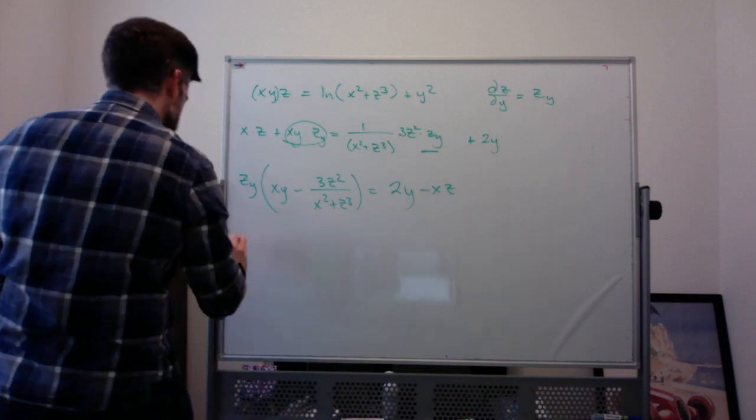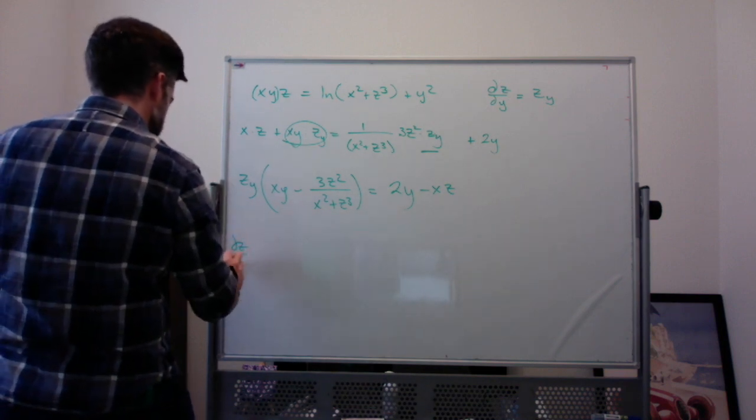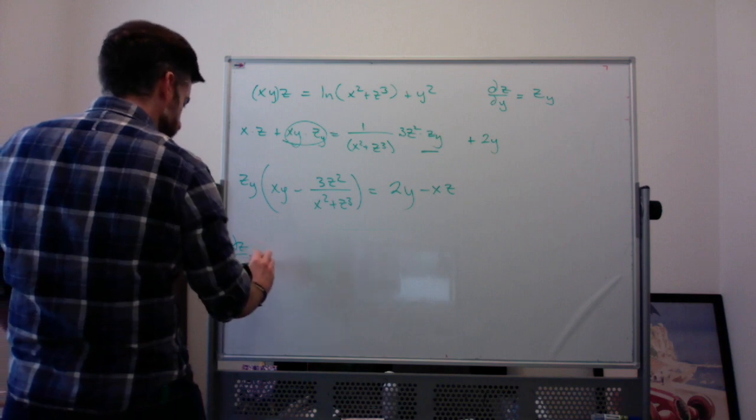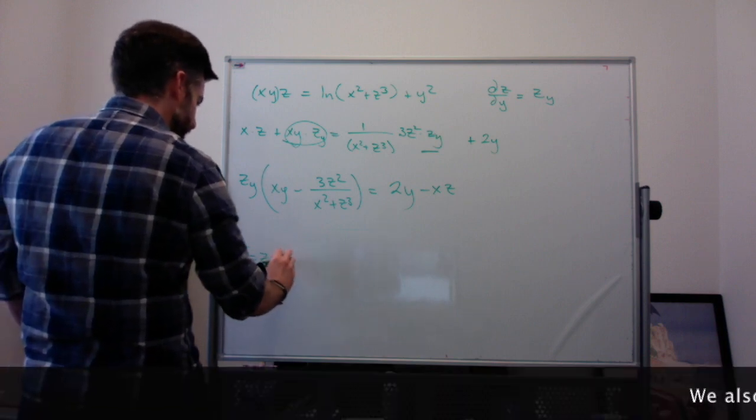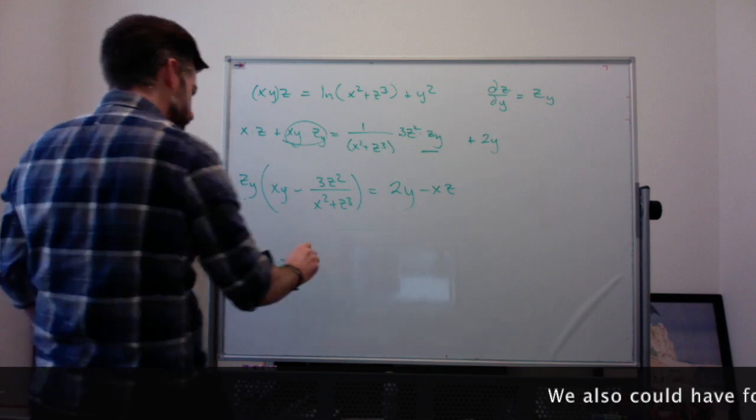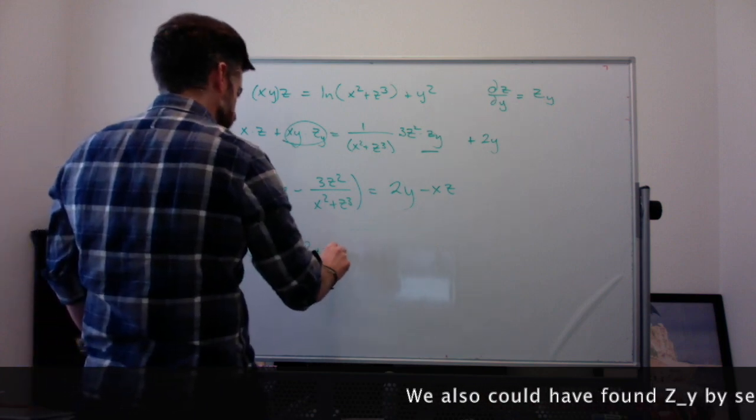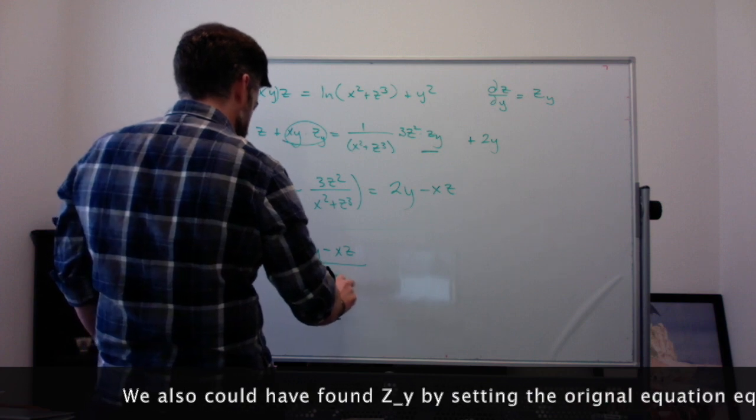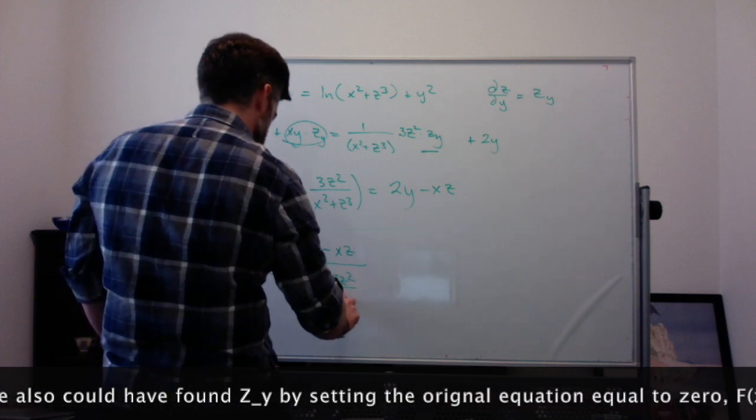Now, I'm excited to have this. So, our ∂z/∂x is hardly ∂z/∂y. Or zx, jeez, zy if you prefer, is that divided by that. So, (2y - xz) divided by (xy - 3z²/(x² + z³)).